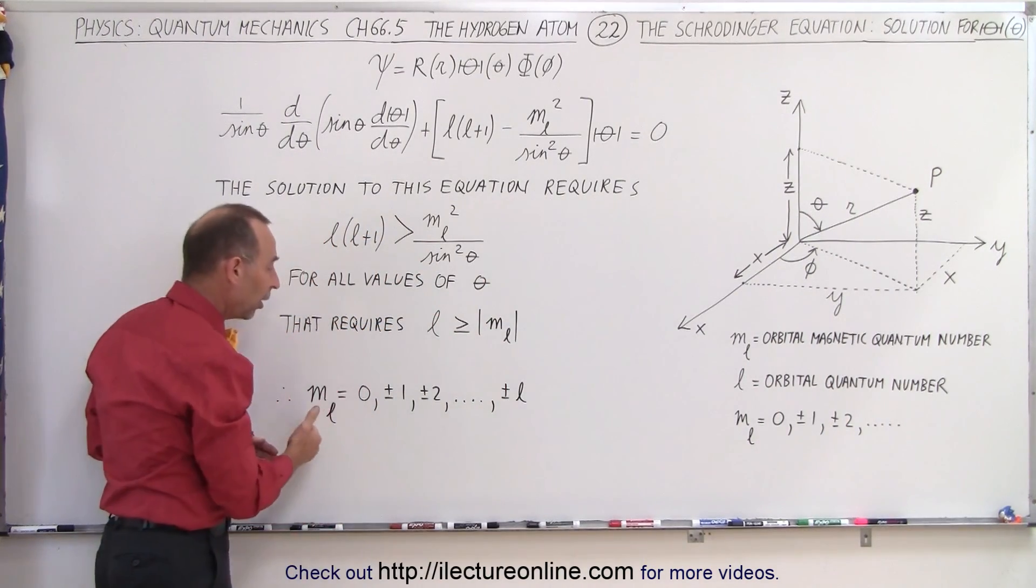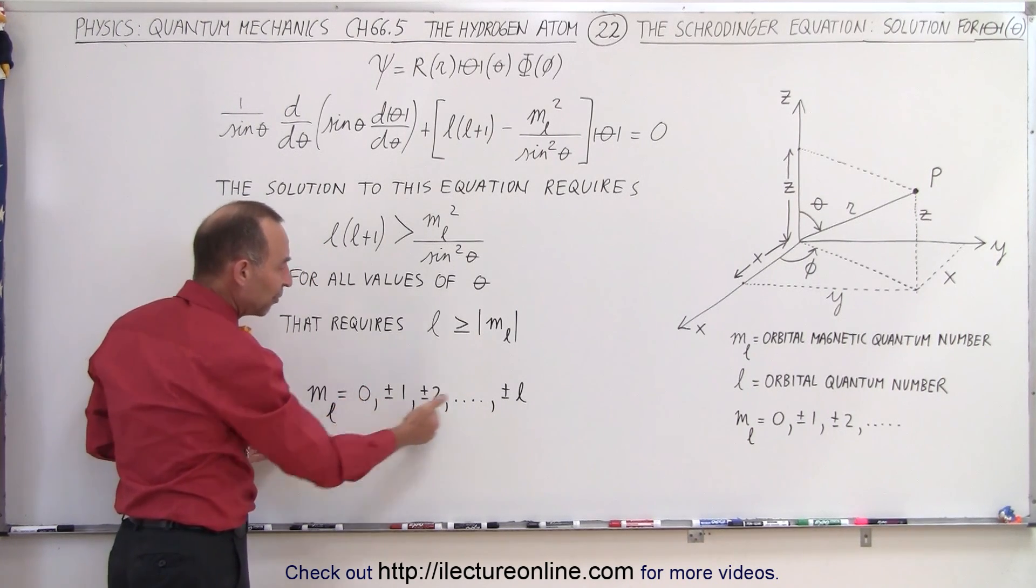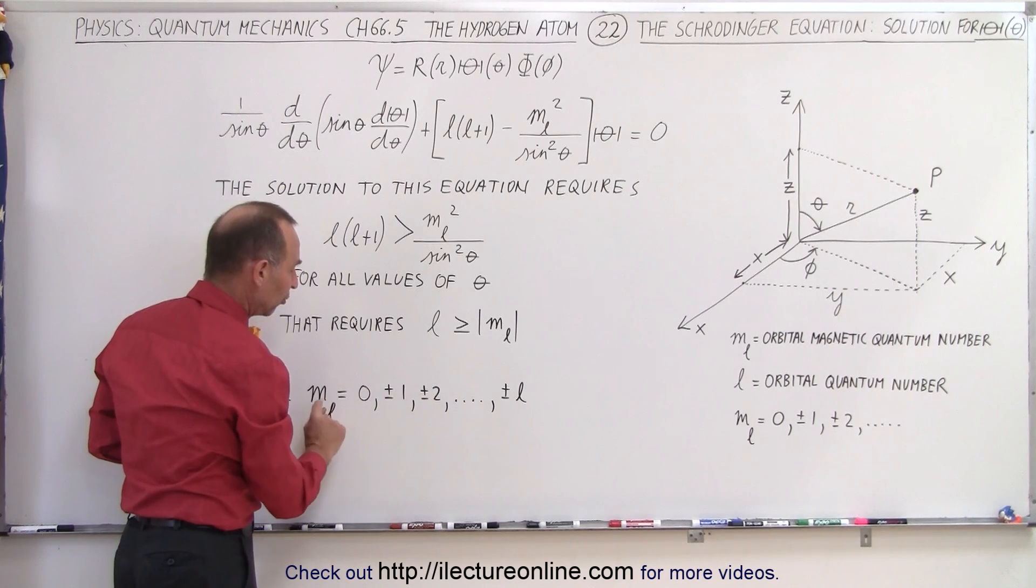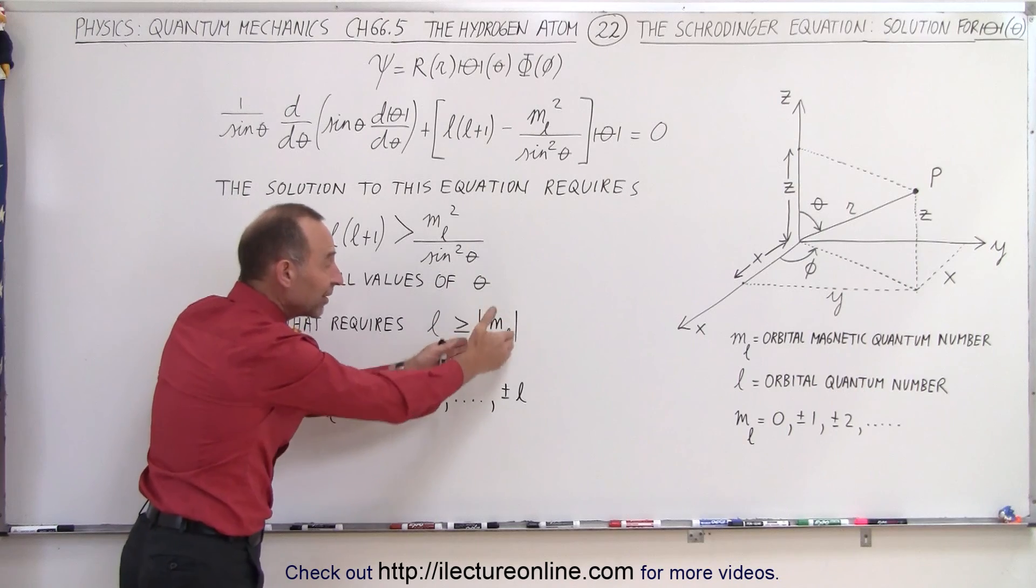that means that the ultimate limit then for m sub l is that it can have every one of these values as long as it's smaller than or equal to l, which means, and of course the absolute value of that,